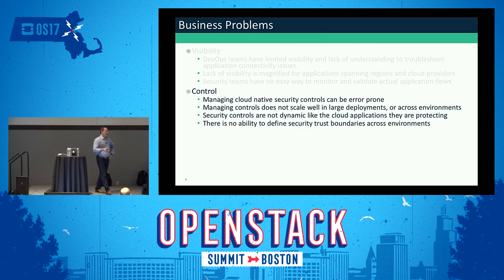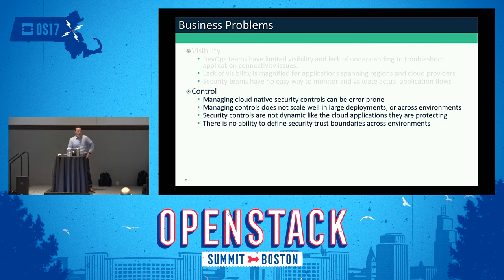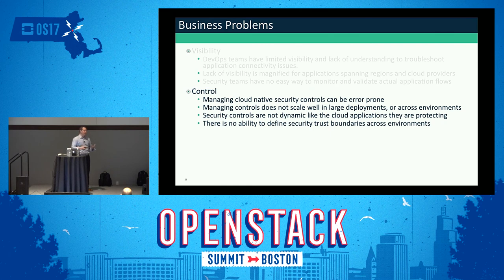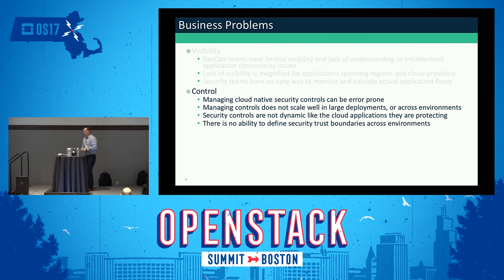The next problem area was control. The security controls in OpenStack using security groups and rules are pretty easy to get wrong and error-prone. You can easily break your application or, worse, leave it in a vulnerable state and get attacked. Managing these controls doesn't really scale with large deployments. It's fine with 10 or 20 VMs, but as you get to hundreds and thousands of VMs across different environments — dev, staging, production — and then potentially multiple regions and providers, it doesn't scale well.